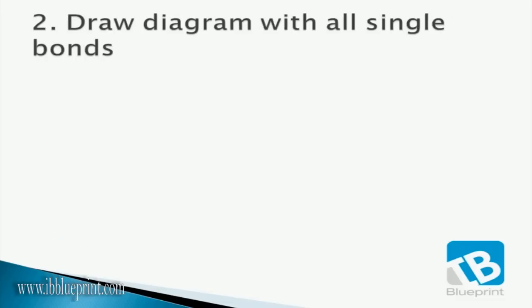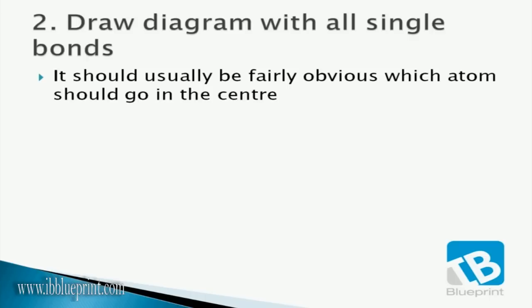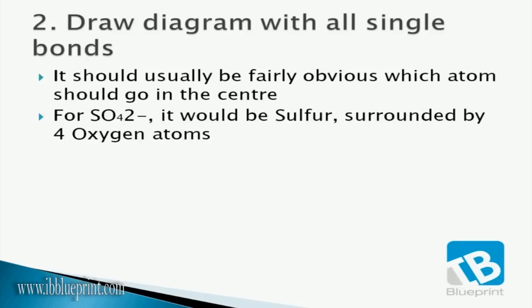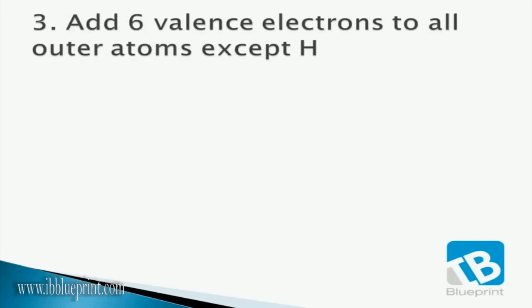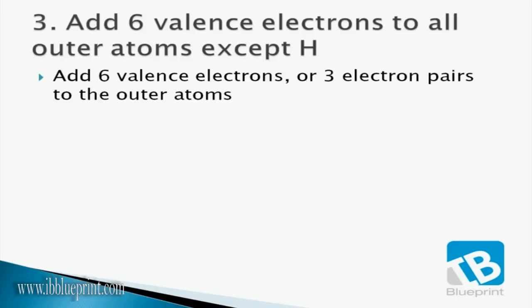Next, we draw a diagram with all single bonds. It should usually be fairly obvious which atom goes in the center. For SO₄²⁻ it would be sulfur surrounded by four oxygen atoms, so we start with all single bonds. In Step 3, we add six valence electrons — three electron pairs — to all outer atoms except hydrogen, since hydrogen has only two maximum in its outer shell. For SO₄²⁻ it should look something like this.